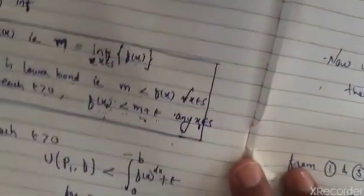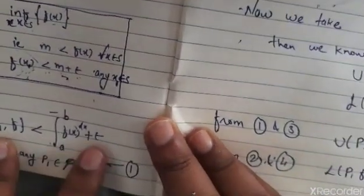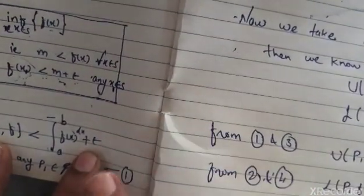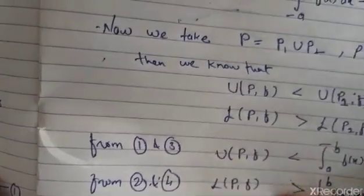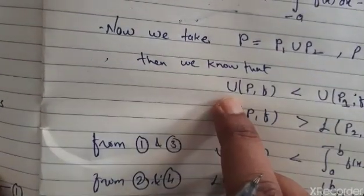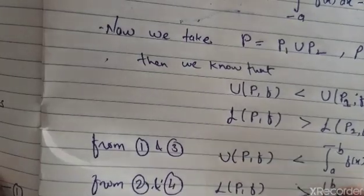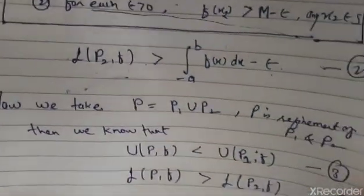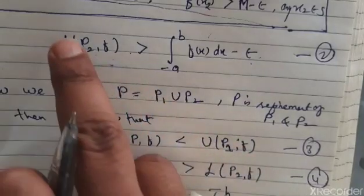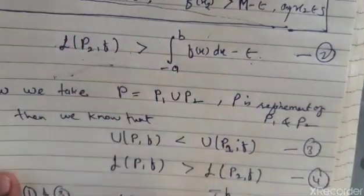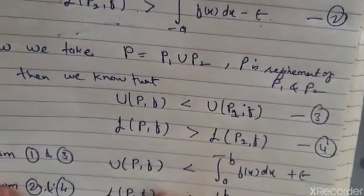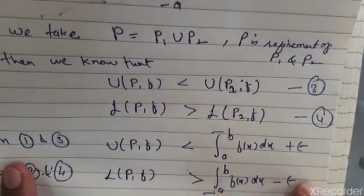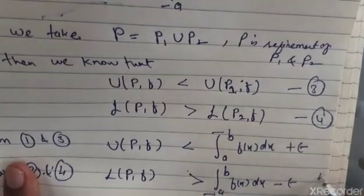Therefore U(P1, f) is less than the integral from a to b of f(x)dx plus epsilon, so U(P, f) is also less than the integral plus epsilon. And L(P2, f) is greater than the integral from a to b of f(x)dx minus epsilon, so L(P, f) is also greater than the integral minus epsilon. This completes the proof.